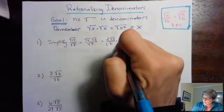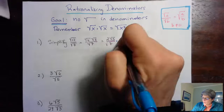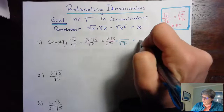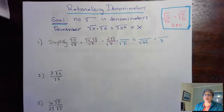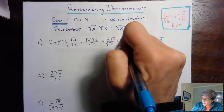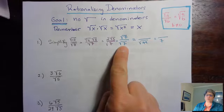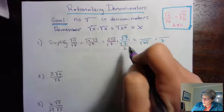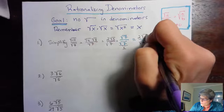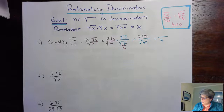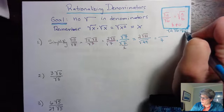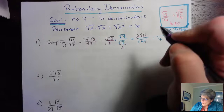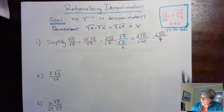Because the square root of something times itself is the number itself, we can multiply the denominator by the square root of 7, because the square root of 7 times the square root of 7 is the square root of 49, which is 7. We've now gotten the square root out of the denominator. If we multiply the denominator by the square root of 7, we also have to multiply the numerator by the square root of 7, because this whole thing equals 1. So here we have 2 times the square root of 21.